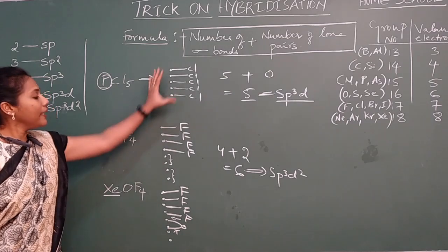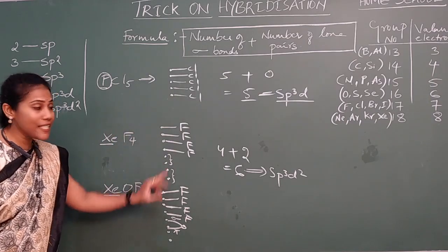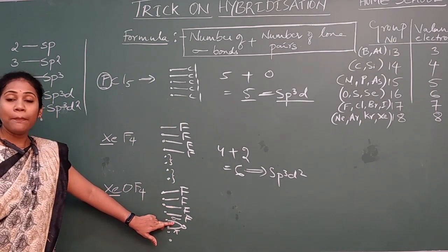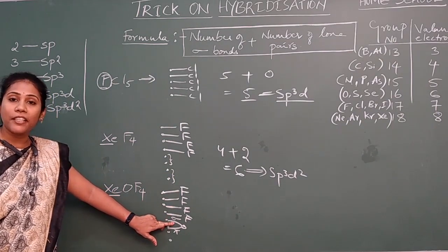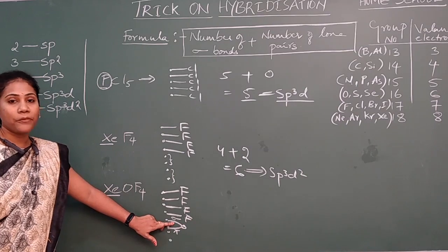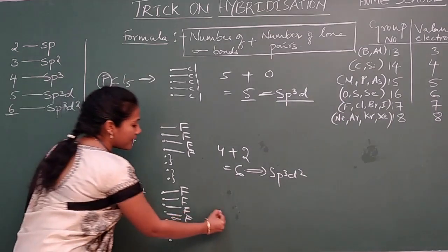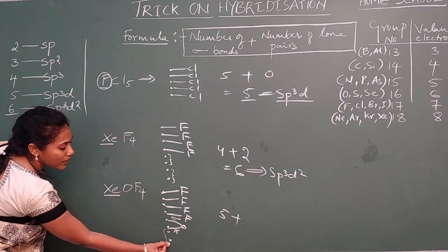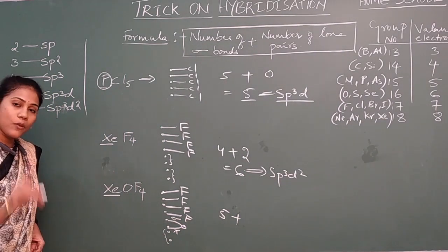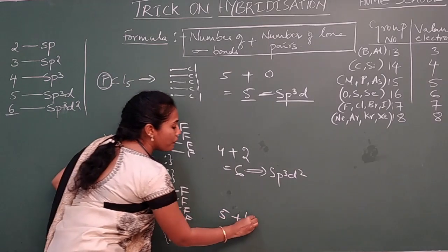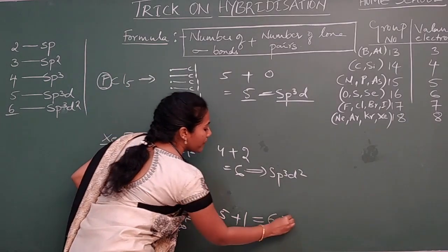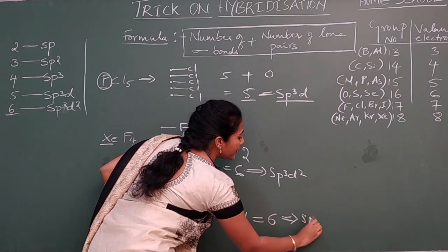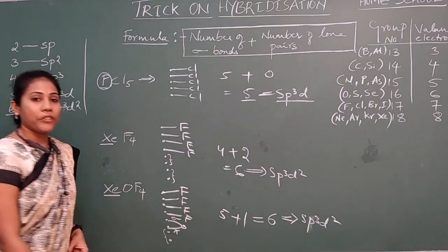Now apply the formula for XeOF4. We count only sigma bonds: 4 from fluorines plus 1 sigma from the oxygen double bond = 5 sigma bonds. One pair of electrons is left free as 1 lone pair. So 5 plus 1 = 6. This molecule also has SP3D2 hybridization.